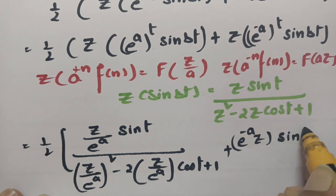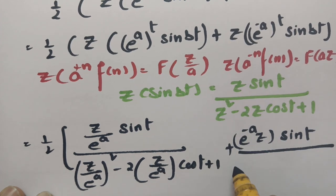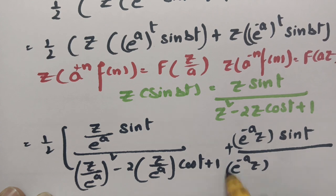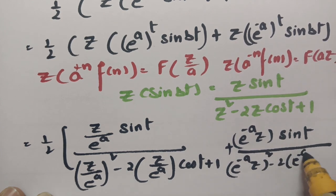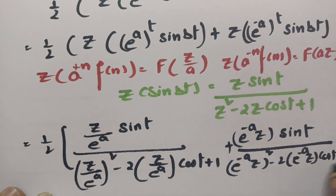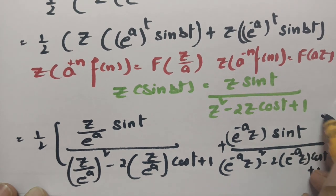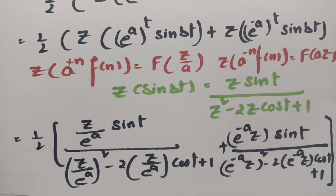And again for sin(t), in place of Z I am writing e power minus a into Z. This is whole square minus 2 times of e power minus a into Z, into cos(t) plus 1. Now if I solve this that will be the answer.